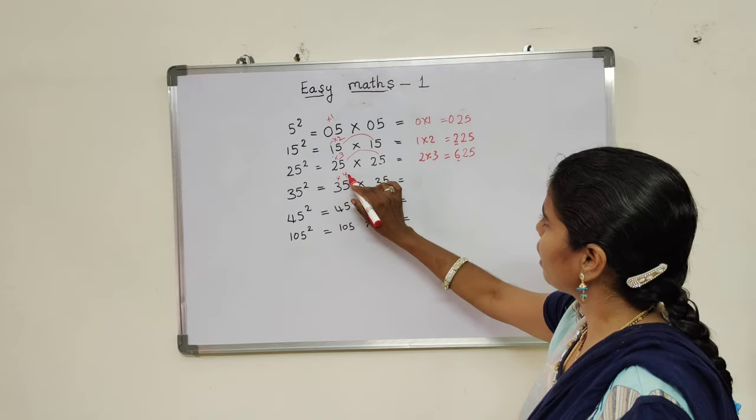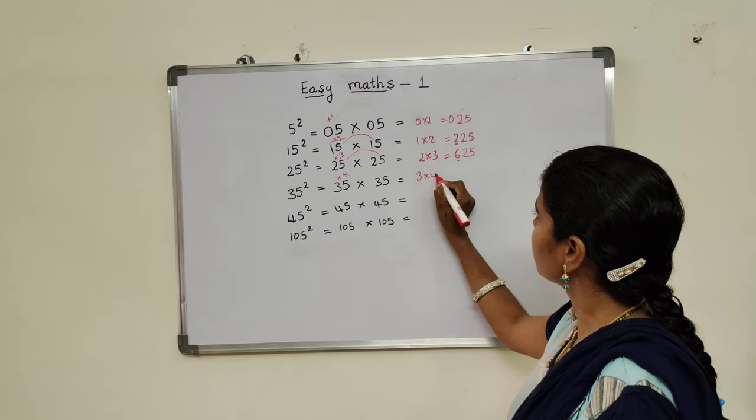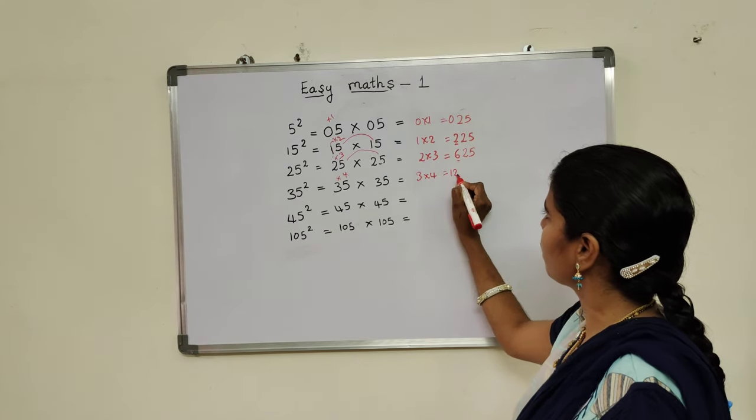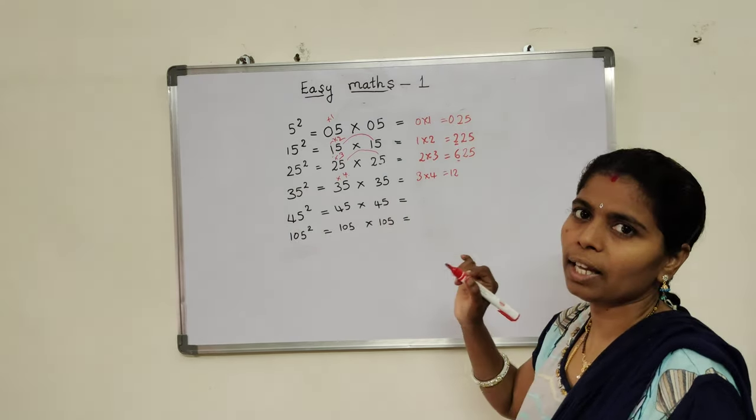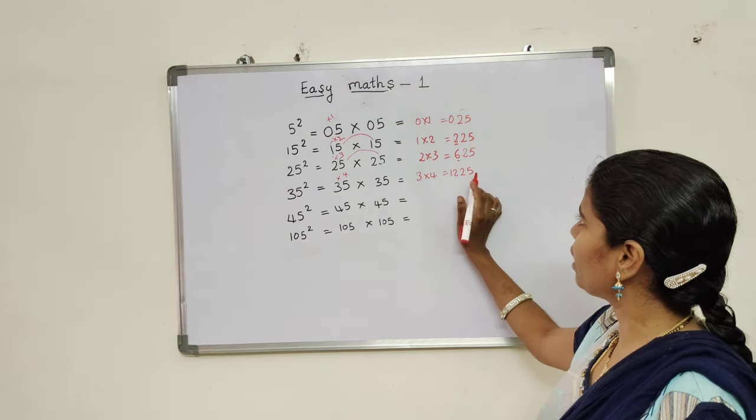Next, 35 square. More than 3, one number is high, that is 4. 3 fours are 12, and 5 fives are 25. So 35 square answer is 1225.